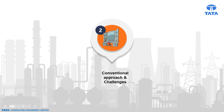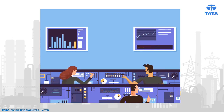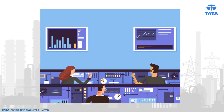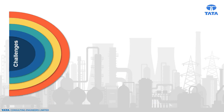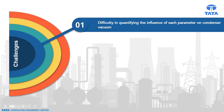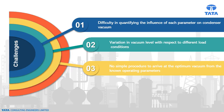Now let's look at the conventional management of the condenser and the challenges in this approach. Power plant operators aim to achieve optimum condenser pressure to get maximum efficiency for the plant. Currently, they face the following technical challenges: difficulty in quantifying the influence of each parameter on condenser vacuum, variation in vacuum level with respect to different load conditions, and no simple procedure to arrive at the optimum vacuum from the known operating parameters.